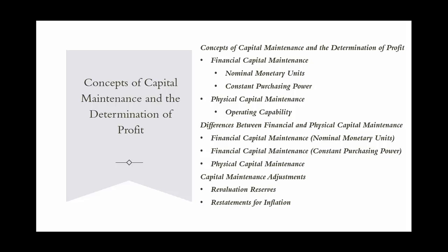The principal difference between the two concepts lies in how they treat the effects of changes in prices of assets and liabilities. Under financial capital maintenance using nominal monetary units, profit represents the increase in nominal money capital over the period. Holding gains — increases in the prices of assets held over the period — are considered profits, even if not realized through sales. For example, GHI Investments holds assets worth $1 million. By year end, the value increases to $1,500,000 due to market conditions. Under financial capital maintenance, the $500,000 increase is considered profit, even if GHI Investments has not sold the assets.